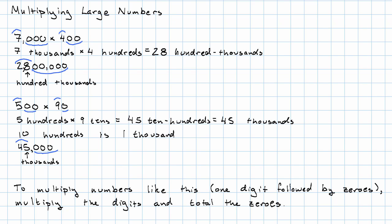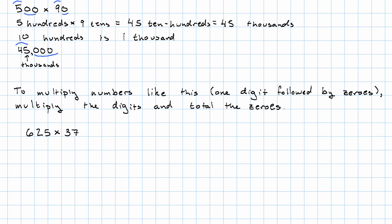We can also use this to multiply more complicated large numbers. If I want to multiply 625 times 37, well this is 6 hundreds, 2 tens, and 5 units times 3 tens and 7 units.